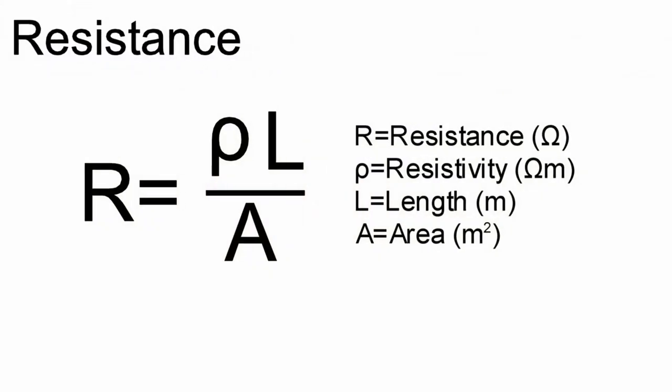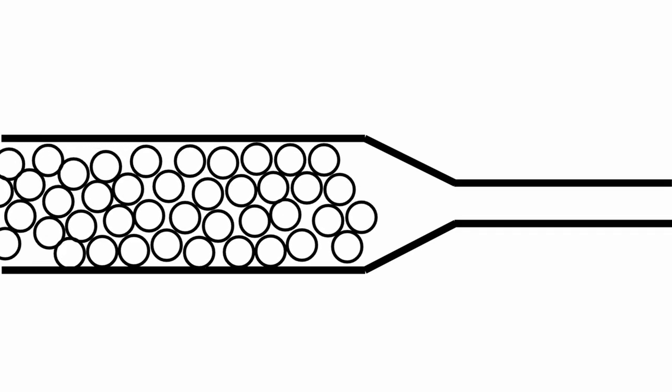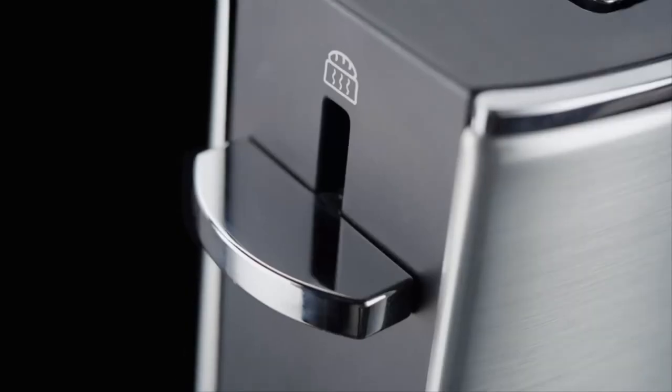The last point in the equation is the cross sectional area of the wire. As the area of the wire reduces, it's more difficult for the electricity to flow through, which is why the resistance is greater.